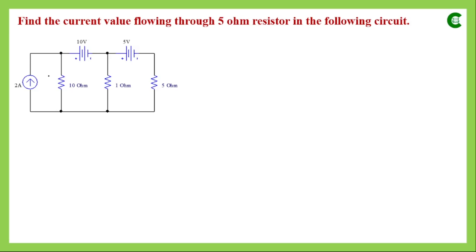Here, since we want to apply KVL exclusively to learn the concept, we are not checking whether mesh or node equations are fewer. We will straightforwardly apply KVL, but first we transform the current source. When we transform a current source into an equivalent voltage source, the value of that voltage source follows Ohm's law: voltage = current × resistance = 2 × 10 = 20 volts. The same 10Ω resistance will be connected in series with the voltage source instead of in parallel as in the original circuit.